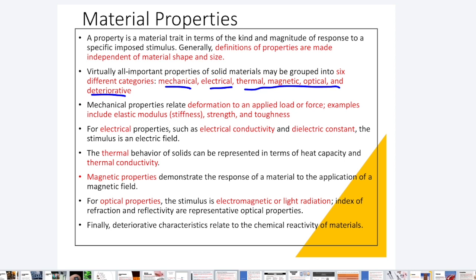For electrical properties, such as electrical conductivity, electrical resistivity, and dielectric constant — or how a material behaves when placed within an electric field — all these are electrical properties. When we study these in detail, we will discuss what happens to electrical properties when we process the material, including the electrical conductivity of metals versus non-metals, ceramics, and so on.